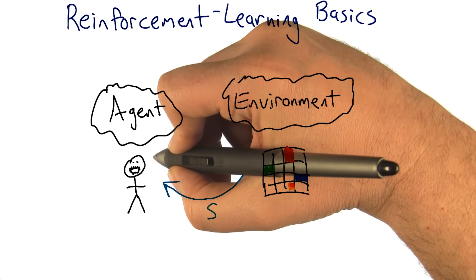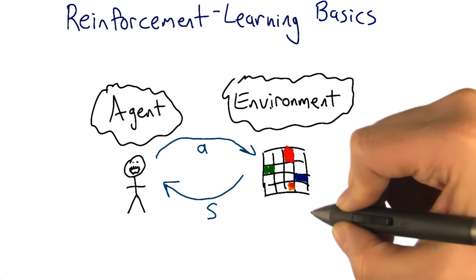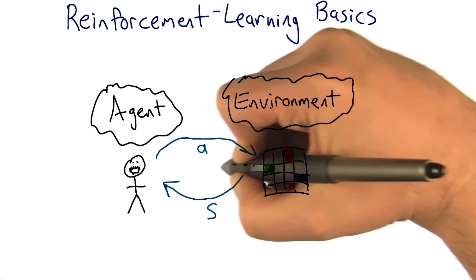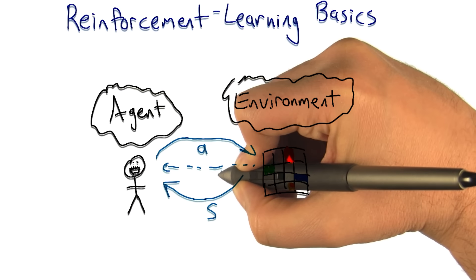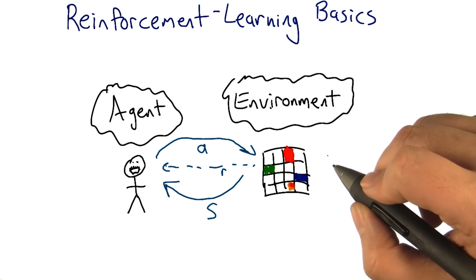You then get to have some influence on the environment by taking actions, A. And then you also receive back, before the next state, some kind of reward for the most recent state action combination. Okay, fair enough.